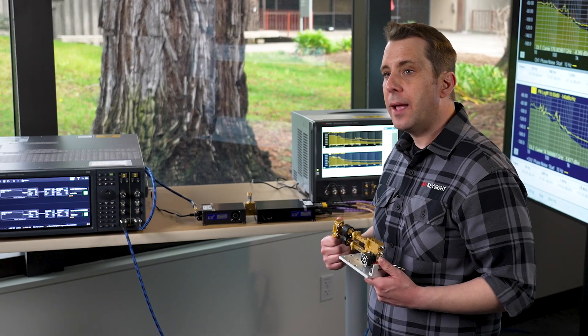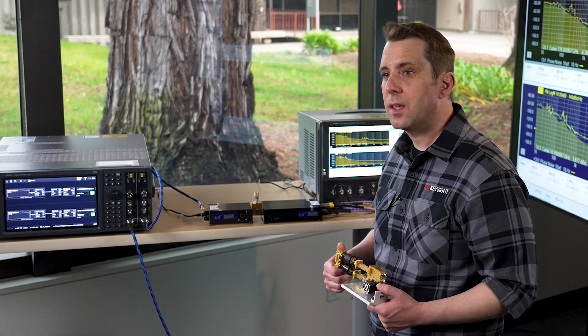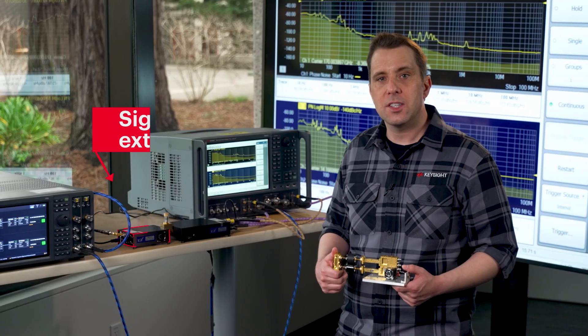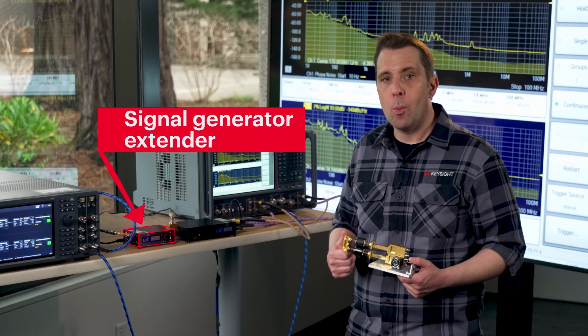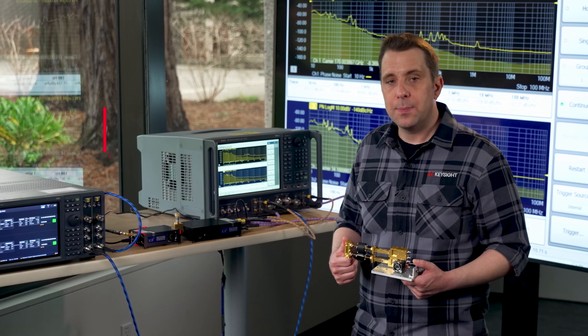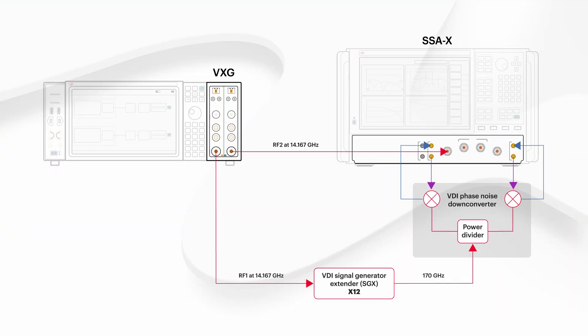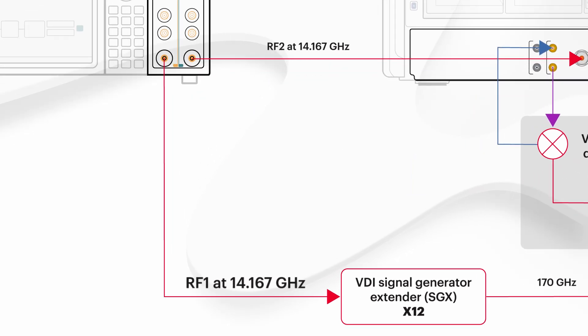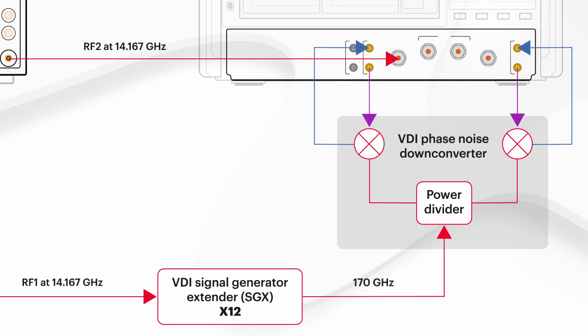To generate a millimeter wave D-band CW signal as our signal under test, we have also brought in a VDI SGX signal generator extender to multiply the output of the VXG up to D-band. As you can see, one VXG RF output is a CW signal at 14.167 gigahertz that is multiplied up to 170 gigahertz by the SGX times 12 active multiplier.